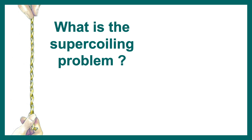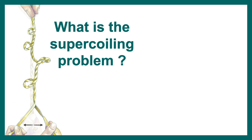Now let's talk about what the supercoiling problem is. Imagine you are holding a rope — on one side you are holding it and from the other side you are trying to unwind it. Due to the torsion already present, it is very difficult to separate it properly. When you start separating it, after a point it winds up within itself.